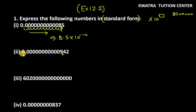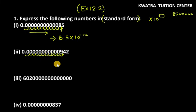For the second number, you can see the point is on the left side and you have to bring it to the right-hand side. Moving from left to right: 1, 2, 3, 4, 5, 6, 7, 8, 9, 10, 11, 12 — how many moves did we make? Again 12 moves. So the number becomes 9.42 into 10 raised to the power of minus 12.